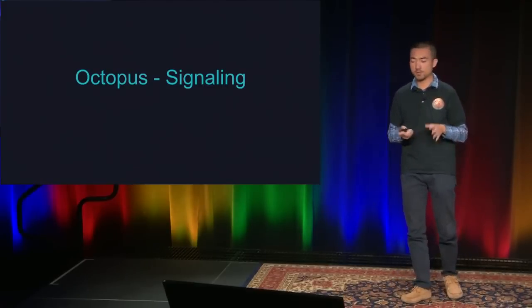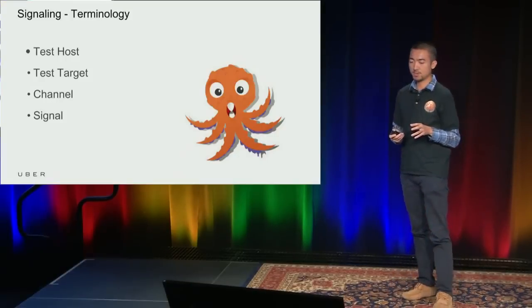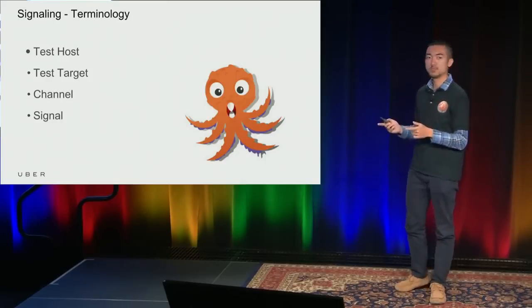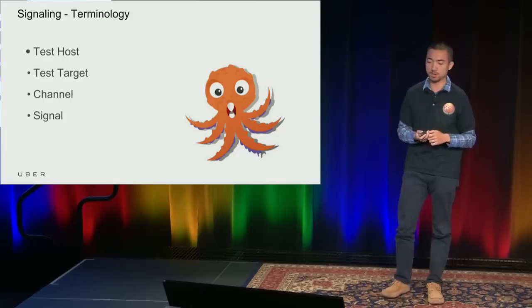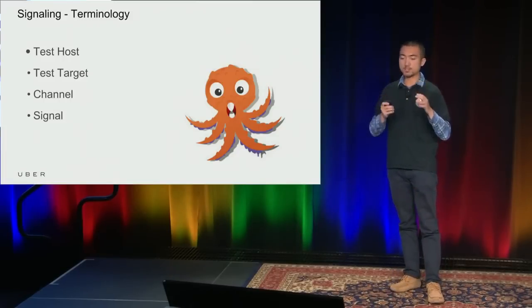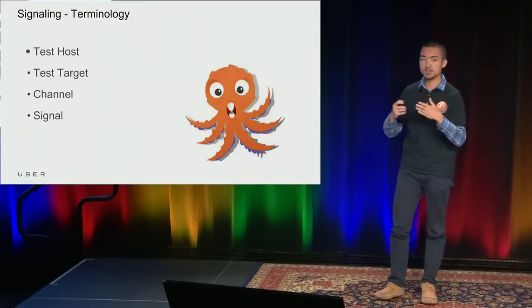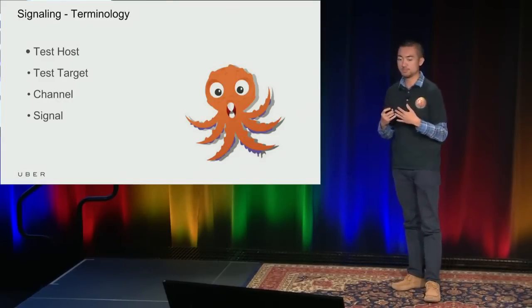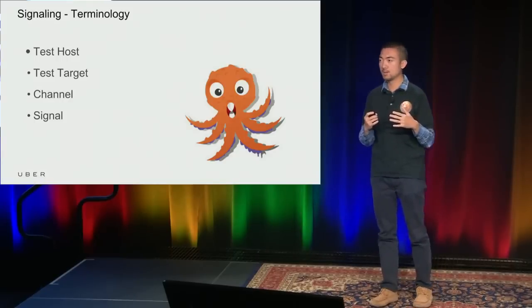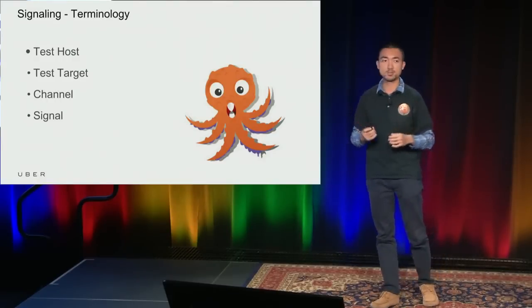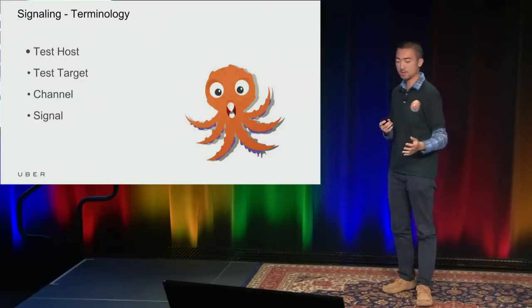Let's talk about signaling. Before diving into technical details, let me share some terminology. The test host is where Octopus runs — it could be a Mac Mini or a laptop. The actual test code runs on test targets, which could be simulators, emulators, or real devices. Between test targets we have communication channels, and in those channels we pass around signals. We want signaling to be simple, so we use plain strings for signals. It's the test targets' and test code's responsibility to interpret the meaning of the signals — for example, 'driver-online,' as Apoel mentioned earlier.